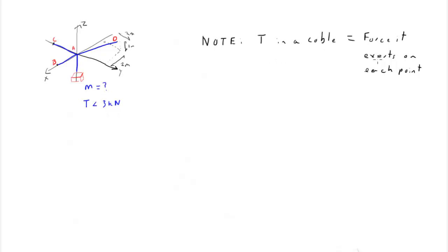So let's talk about that first. The tension in a cable is equal to the force it exerts on each point. And it says if none of the cables can withstand a force greater than three kilonewtons, so the maximum force is three kilonewtons, what is the maximum mass of the crate that can be supported?